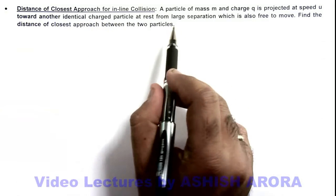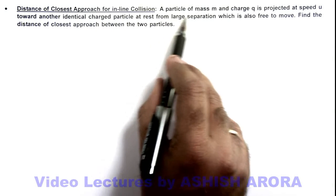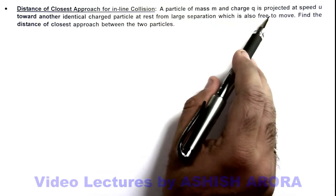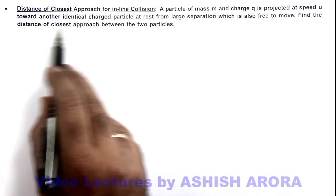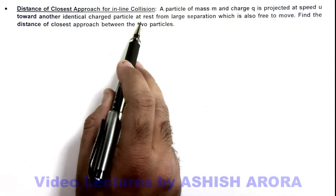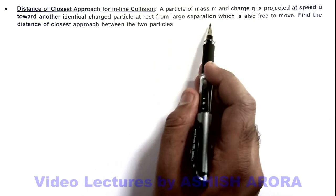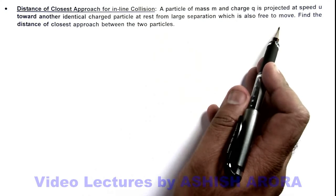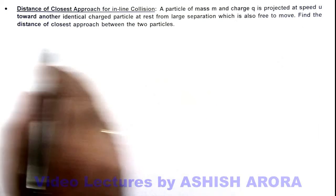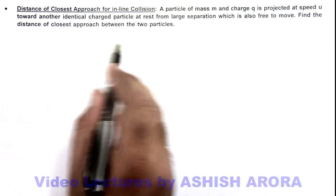Here the situation is saying that a particle of mass m and charge q is projected at speed u toward another identical charged particle at rest from large separation which is also free to move. We are required to find the distance of closest approach between the two particles.